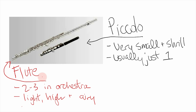Woodwinds are called as such because you blow into them — that's the wind part — and they used to be made of wood. Of course wooden flutes aren't a thing in orchestras anymore, but some instruments like clarinets and oboes still use wooden reeds. Starting from the highest, we have the piccolo, which is extremely small and very high-pitched — it can be even shrill — and there's usually just one in the orchestra because they're pretty intense. The flute usually has two to three in an orchestra and has a high, light, and airy sound, though not nearly as shrill as the piccolo.